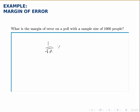To do that, some people write that this times a hundred percent is the margin of error. And that times a hundred percent just converts that decimal into a percentage.